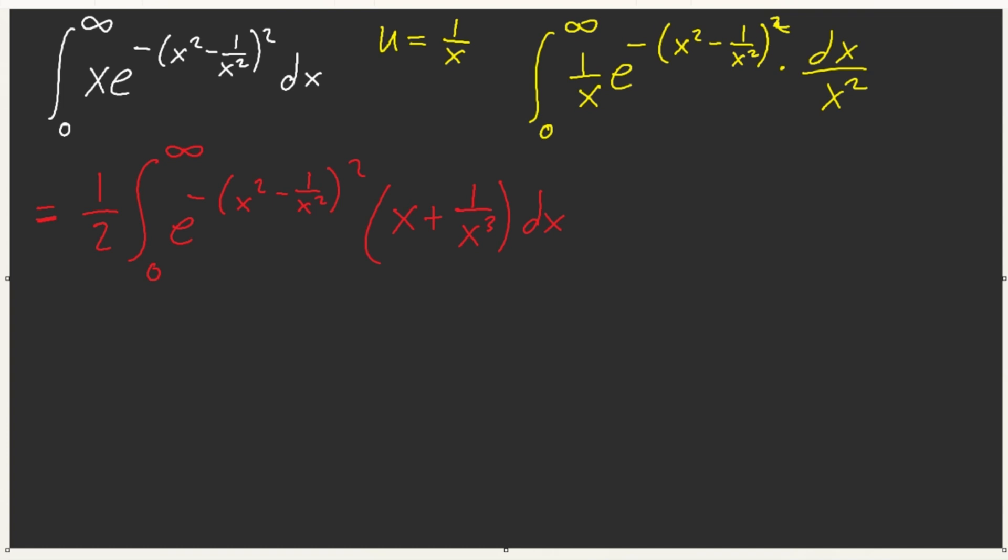What do you notice? This is u. Let u equal x squared minus 1 over x squared. And what is du? 2x plus 2 over x cubed. And notice, if I factor 2 out, we have exactly our derivative here. Oh my goodness.